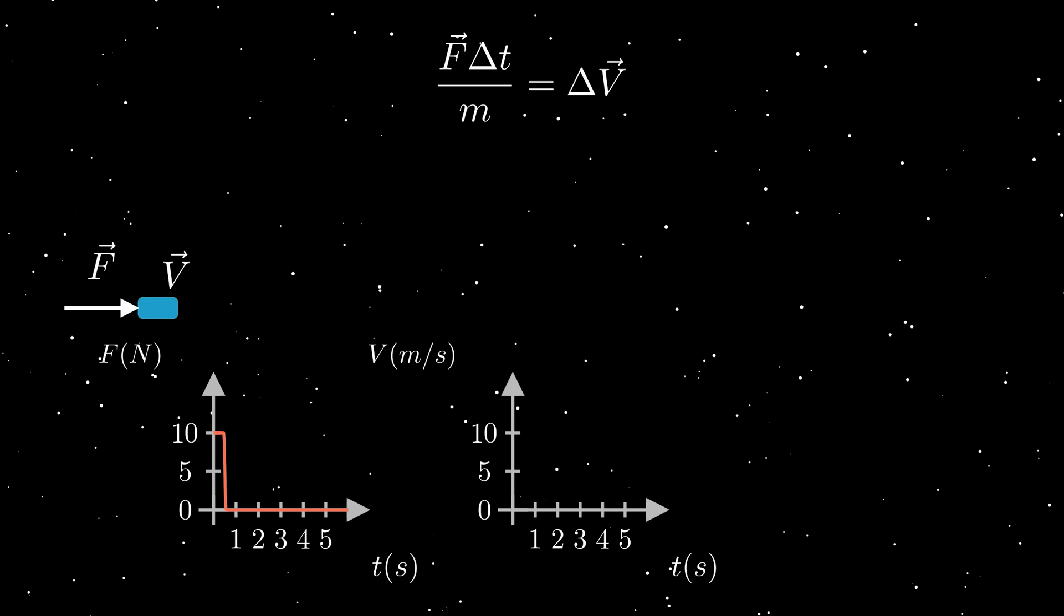Correspondingly, in the initial 0.5 second where there is a force our speed is going to constantly increase. Once we stop pushing, due to Newton's first law a body in motion is going to stay in motion, there's no additional force now so it's just going to keep on going at that same speed. We are going to plot the force and the speed in real time.